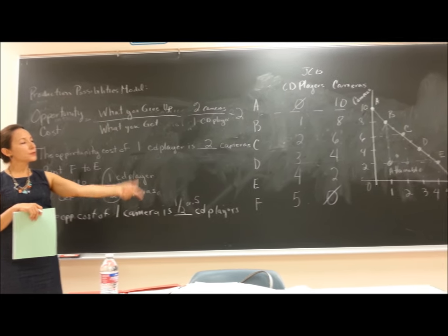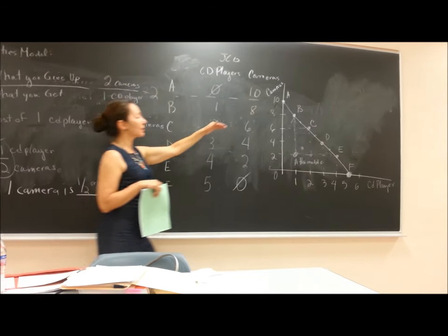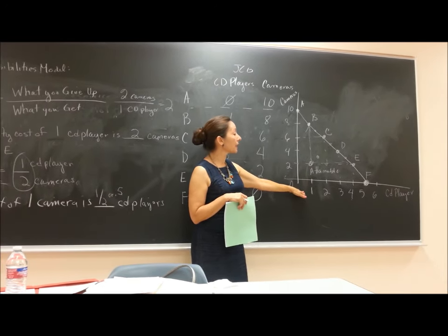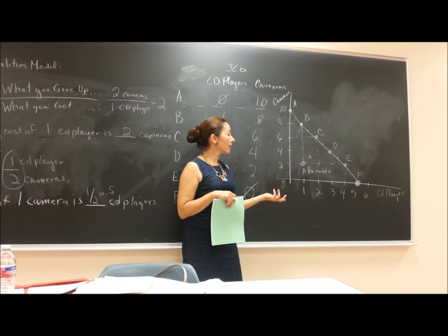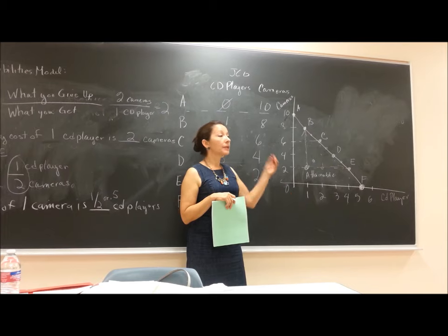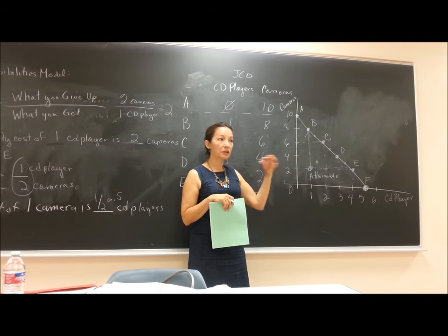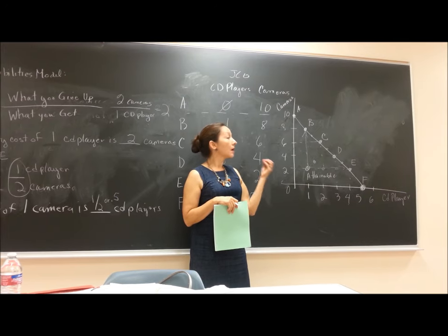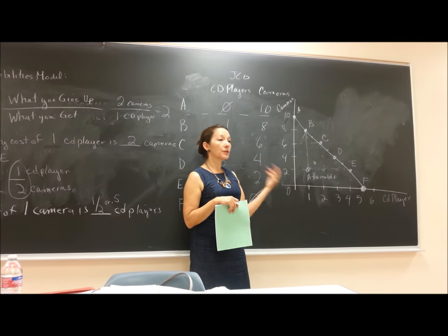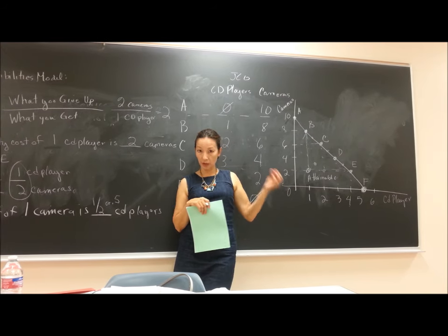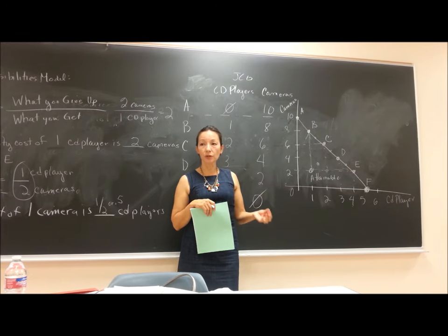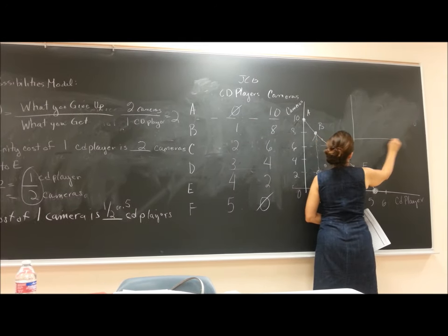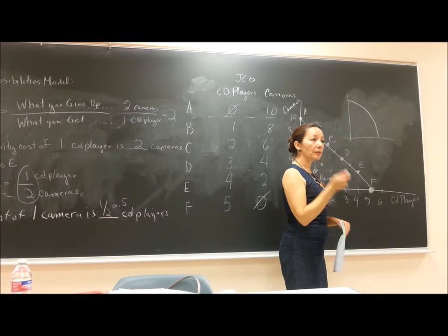This PPF is linear — a straight line — because it assumes resources are perfectly transferable, meaning engineers producing cameras also know how to produce CD players. But as you use more and more specialized resources, you get diminishing marginal returns. So the real shape of the production possibilities frontier is curved. In your book, the PPF looks like a curve, and that curve represents diminishing marginal returns.